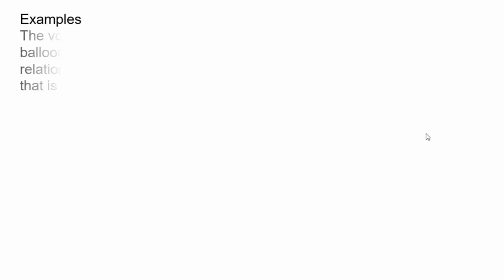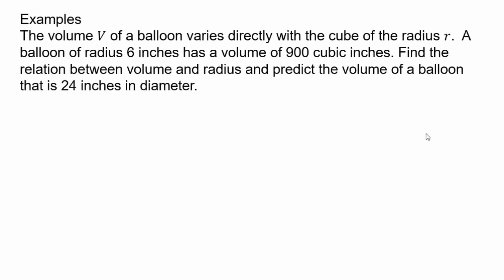Let's take an example so you can see how it can be applied. A volume V of a balloon varies directly with the cube of the radius. Imagine putting air in a balloon. The radius goes up. The volume of the balloon will go up. So those two are directly related to each other. But it's not just V and r. V is related to r, but cube of r.